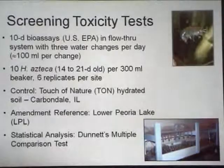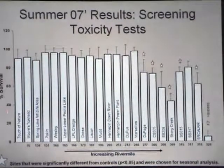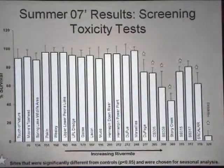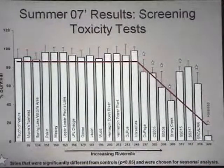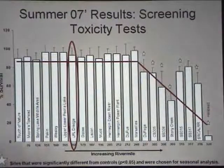Here are the screening toxicity results, with percent survival on the Y-axis and increasing river mile on the X-axis, from Touch of Nature as control through Morristown Head to Halstead. The star sites indicate significant difference from control in terms of survivorship. A trend toward increased toxicity going toward Chicago is evident, starting around the DuPage River site all the way up to Halstead. The LPL dredge used as our reference is not toxic, and none of the core samples showed toxicity.